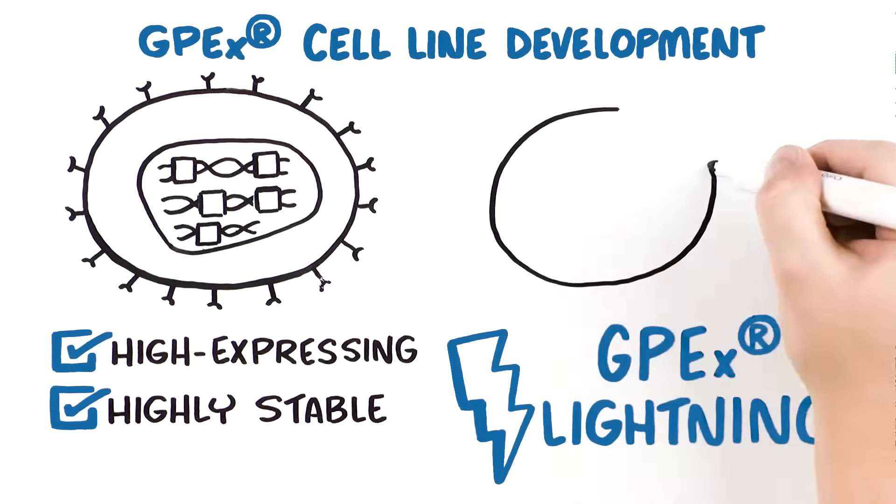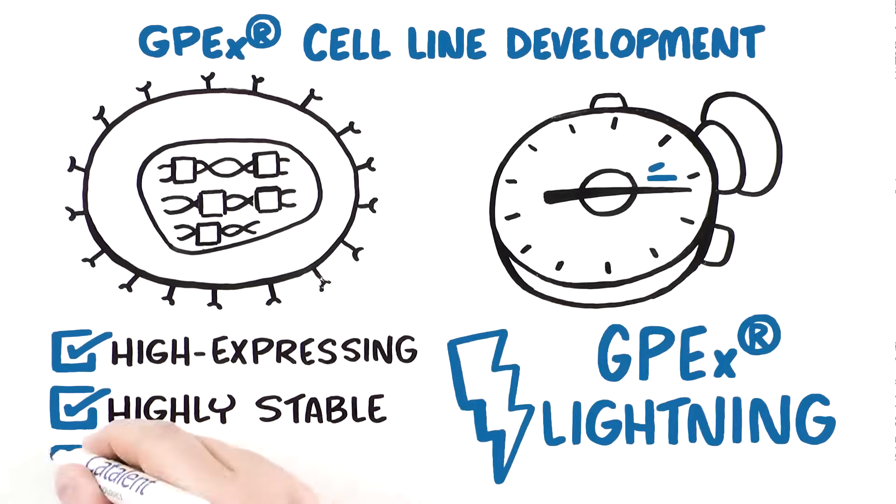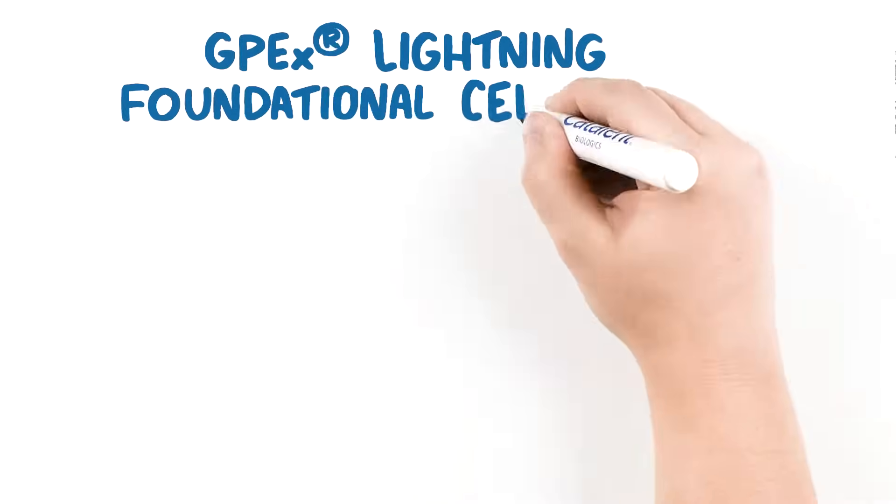GPX Lightning takes cell line development to the next level, shortening the time to generate stable pools or clonal cell lines.